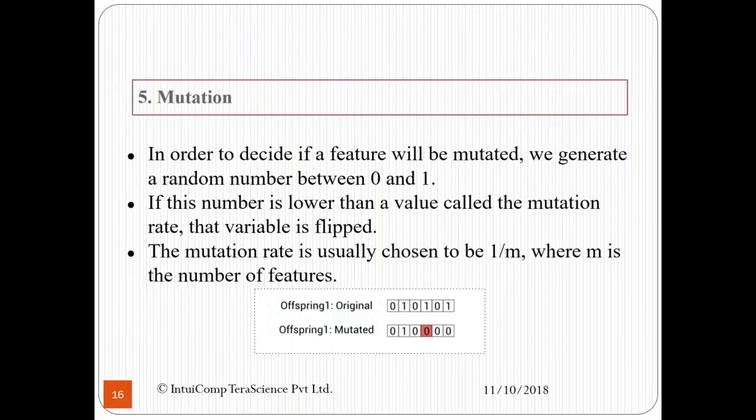Next, we talk about mutation. In order to decide if a feature will be mutated, we generate a random number between 0 and 1, which is then compared with the mutation probability. If the probability of mutation turns out to be higher than this number, then we do mutation. For example, let us take 0.25 as our mutation rate. If the random number generated lies between 0 and 0.25, then we will perform the mutation. The mutation rate is usually chosen to be 1 by M, where M is the number of features.